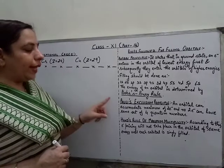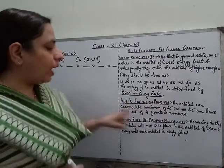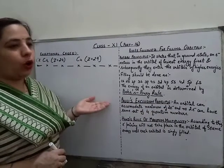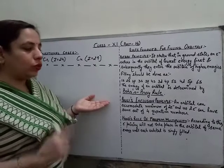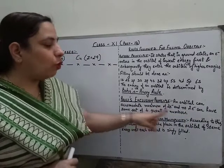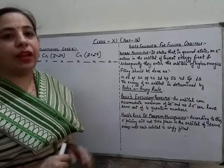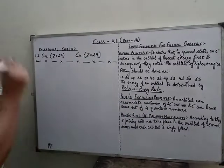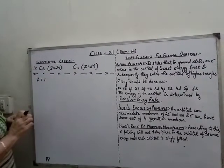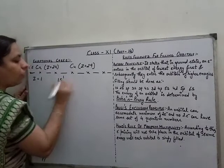Moving to the next principle: Pauli's Exclusion Principle. It states that an orbital can accommodate a maximum of 2 electrons, and no two electrons can have the same set of 4 quantum numbers. For example, if we take an element with atomic number 1, there is only one electron and its electronic configuration is 1s1.